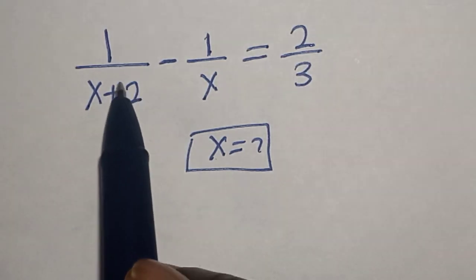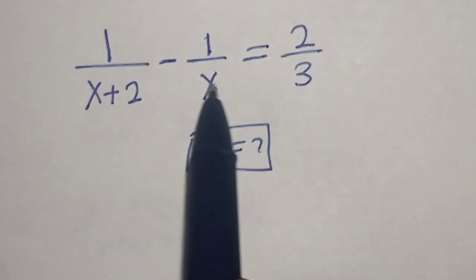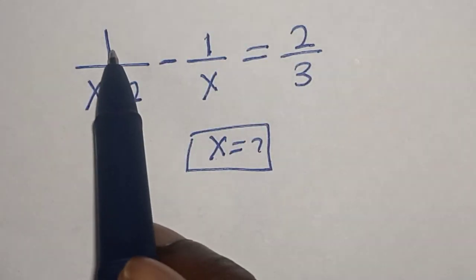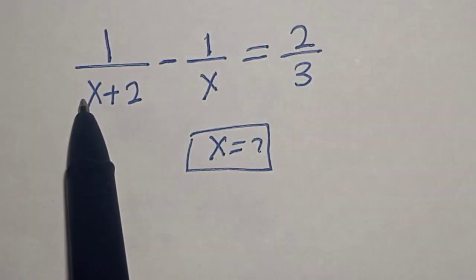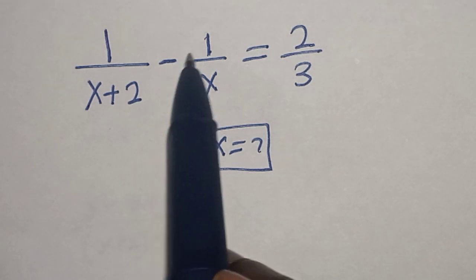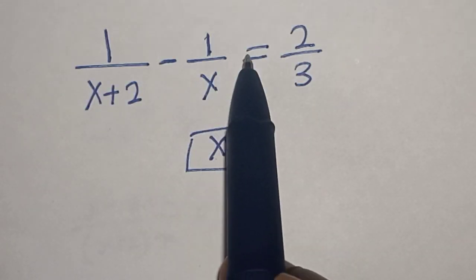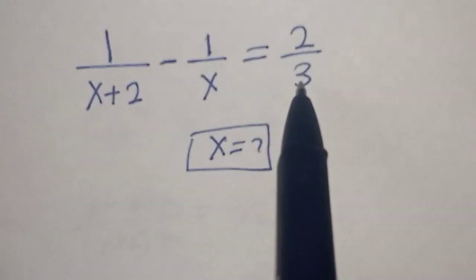Hello, welcome to Magis. In this class we want to find the value of 1 divided by x plus 2, minus 1 over x, is equal to 2 over 3.